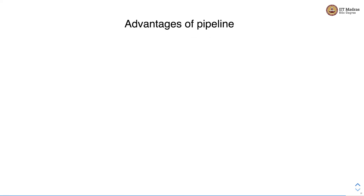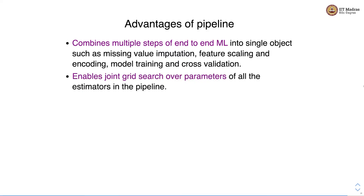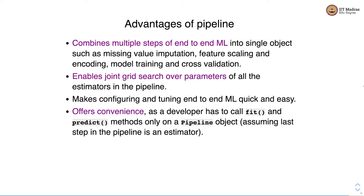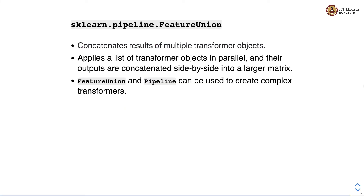The advantages of pipeline are: it combines multiple steps of an end-to-end machine learning pipeline into a single object; it enables joint grid search over parameters of all estimators; it makes configuration and tuning quick and easy; it offers convenience since the developer only calls fit and predict on the pipeline object; and it reduces code duplication — with a pipeline object one doesn't have to repeat pre-processing code for the test set.